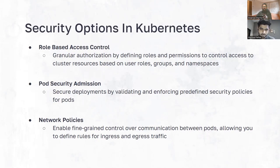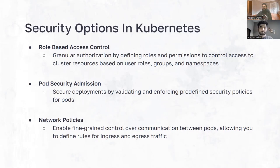The next one is pod admission policy. You can think of it as a vigilant security guard outside your building. When a pod is created, the policy kicks in and validates the configuration, ensuring that only authorized folks are allowed access to your pods. And lastly, and most importantly, are network policies. These are basically like virtual fences that safeguard your network, allowing you to create logical boundaries that permit only authorized communication. These three are relatively basic yet important options that Kubernetes provides out of the box.